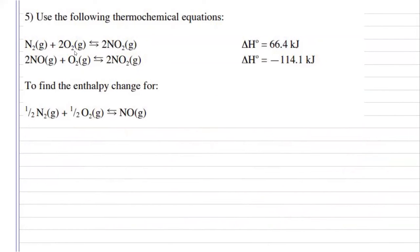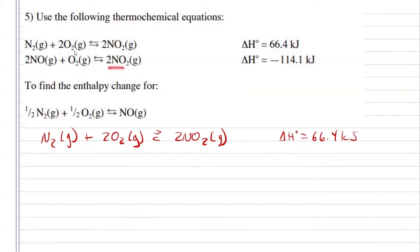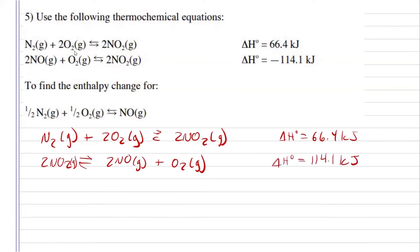For number five, we are given both steps, and this is the enthalpy that we want to find. Looking at the reactions, I have my nitrogen and my oxygen molecules as a reactant, so I'm just going to bring that one down. I'm not going to change it. So, the enthalpy for that reaction would stay the same, 66.4 kilojoules. For the second reaction, I am actually going to reverse this reaction. That way, I can cancel out my nitrogen dioxide, since that's nowhere in my products. So, reversing that one, it's going to cause my enthalpy to switch, so it's going to now require 114.1 kilojoules.